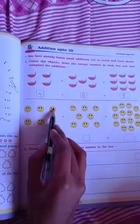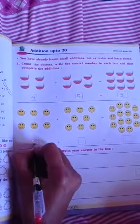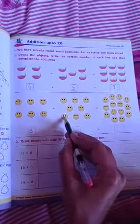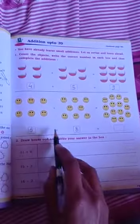1, 2, 3, 4, 5, 6. There are 6 smiley balls. 1, 2, 3, 4, 5, 6, 7, 8. 8 smiley balls. How many balls are there? 6 plus 8.